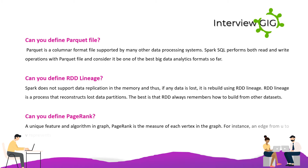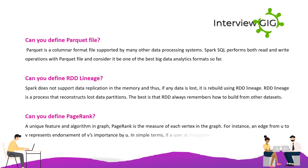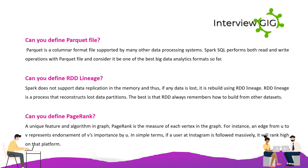Can you define Page Rank? Page Rank is a unique feature and algorithm in graph processing. It is the measure of each vertex in the graph. For instance, an edge from u to v represents endorsement of v's importance by u. In simple terms, if a user on Instagram is followed massively, they will rank high on that platform.